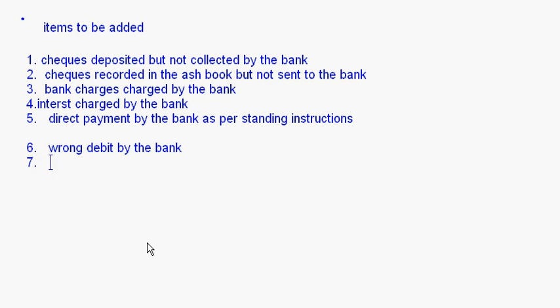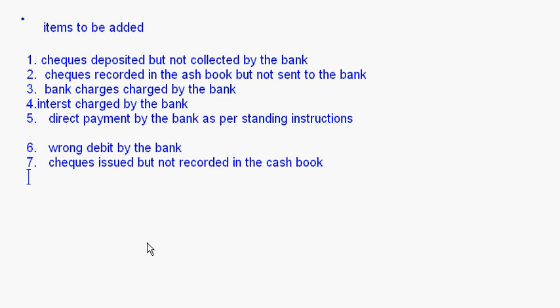Next, checks issued but not recorded in the cash book. When you issue checks, that increases the overdraft balance because you already have an unfavorable balance. Since the checks have not been recorded in the cash book, the cash book overdraft balance is less. However, those checks would have been presented for payment and paid by the bank, so the bank's overdraft balance increases — this amount should also be added.